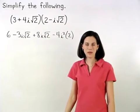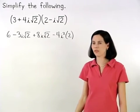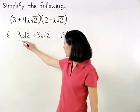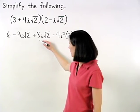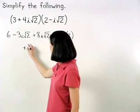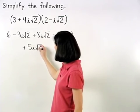Next, we can combine our like terms. Negative 3i root 2 plus 8i root 2 is positive 5i root 2.